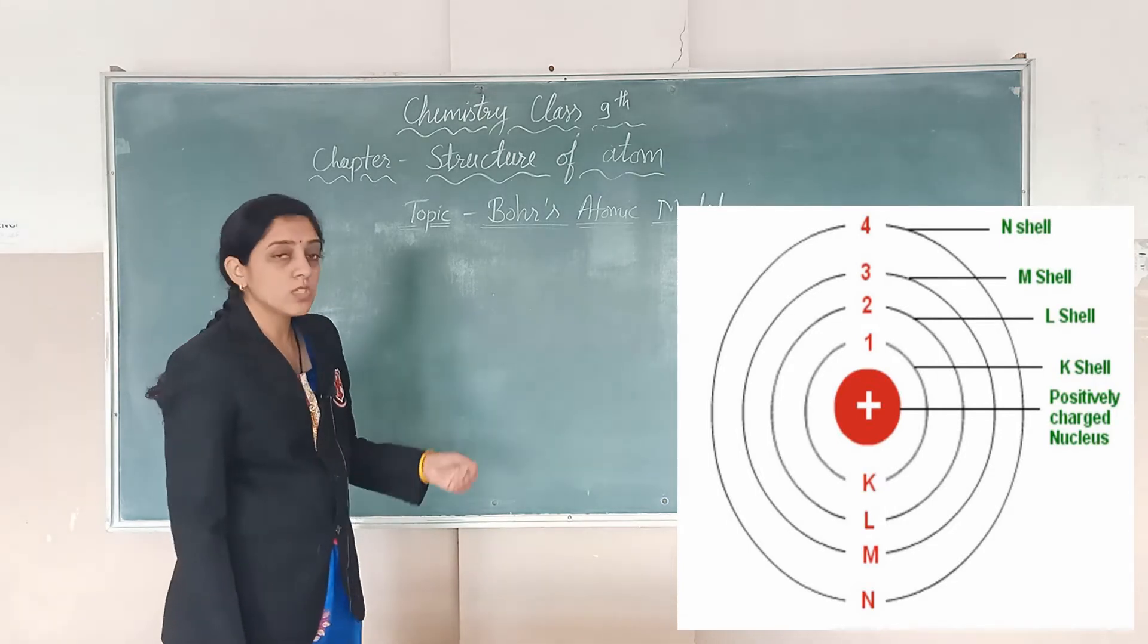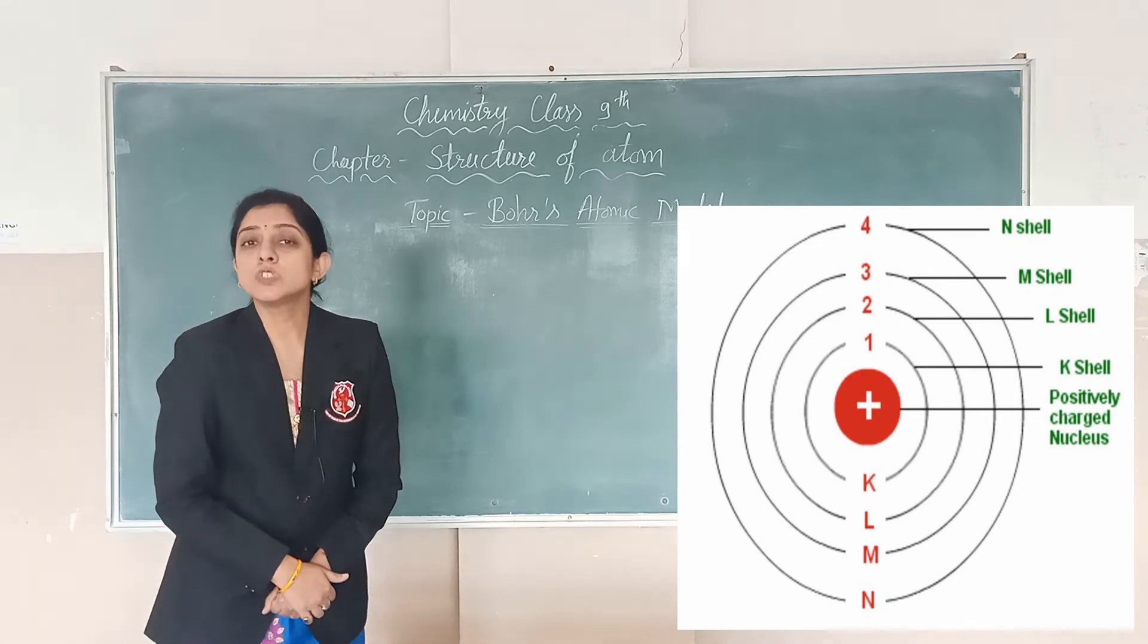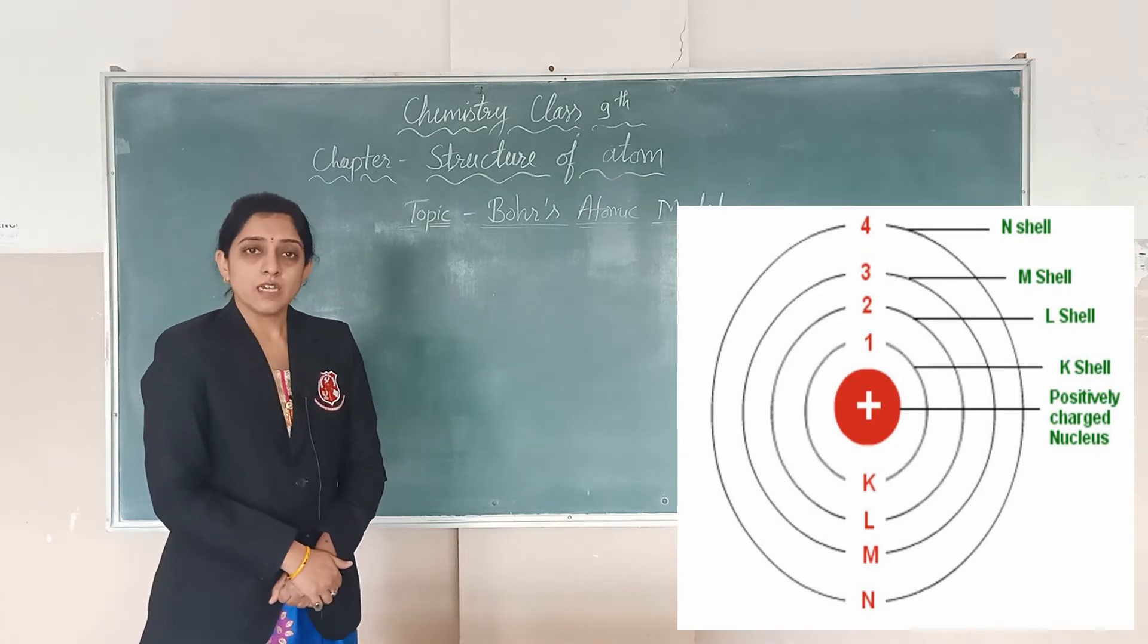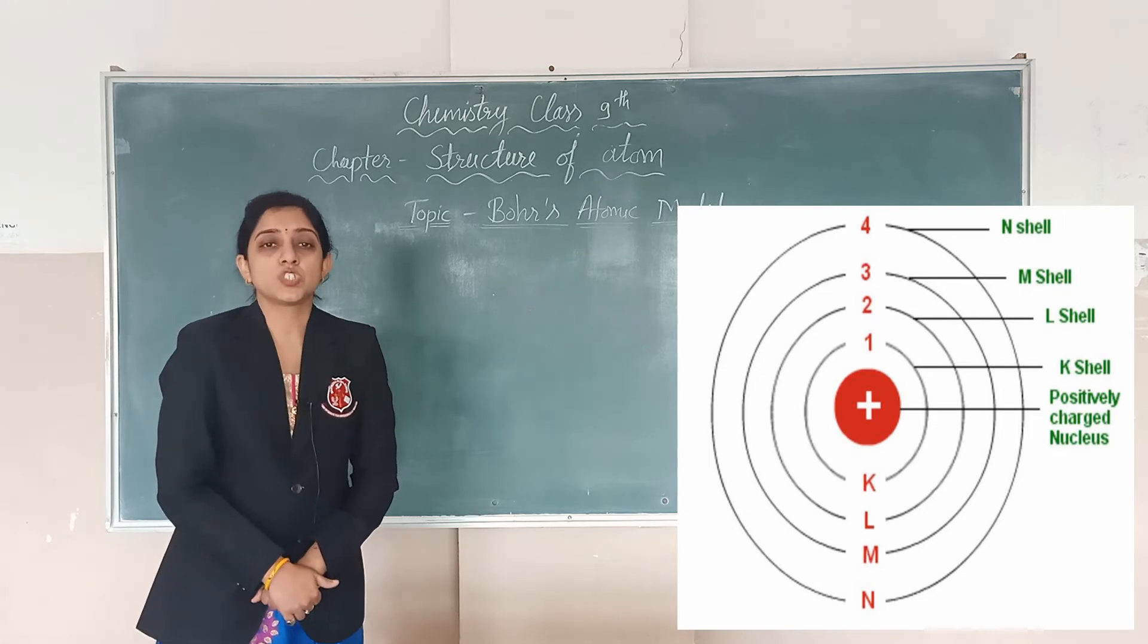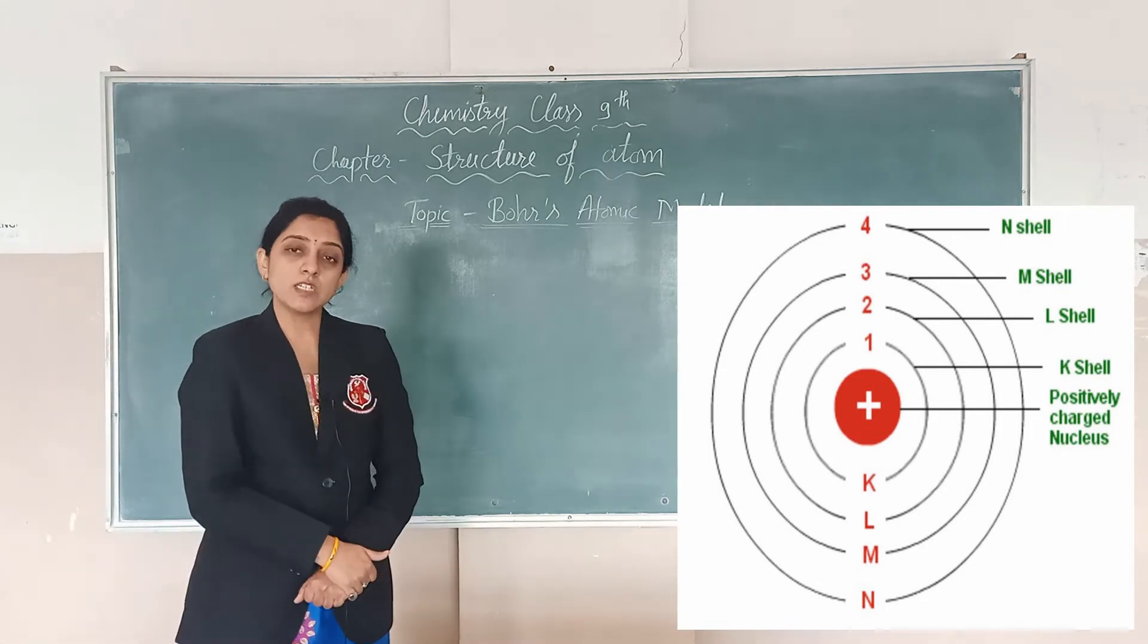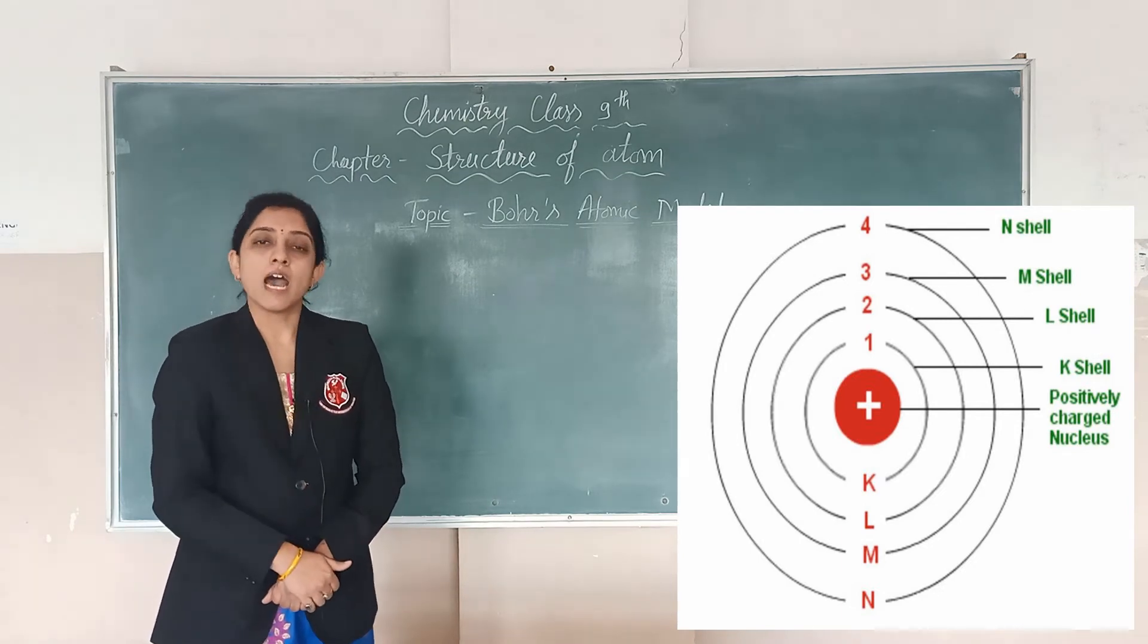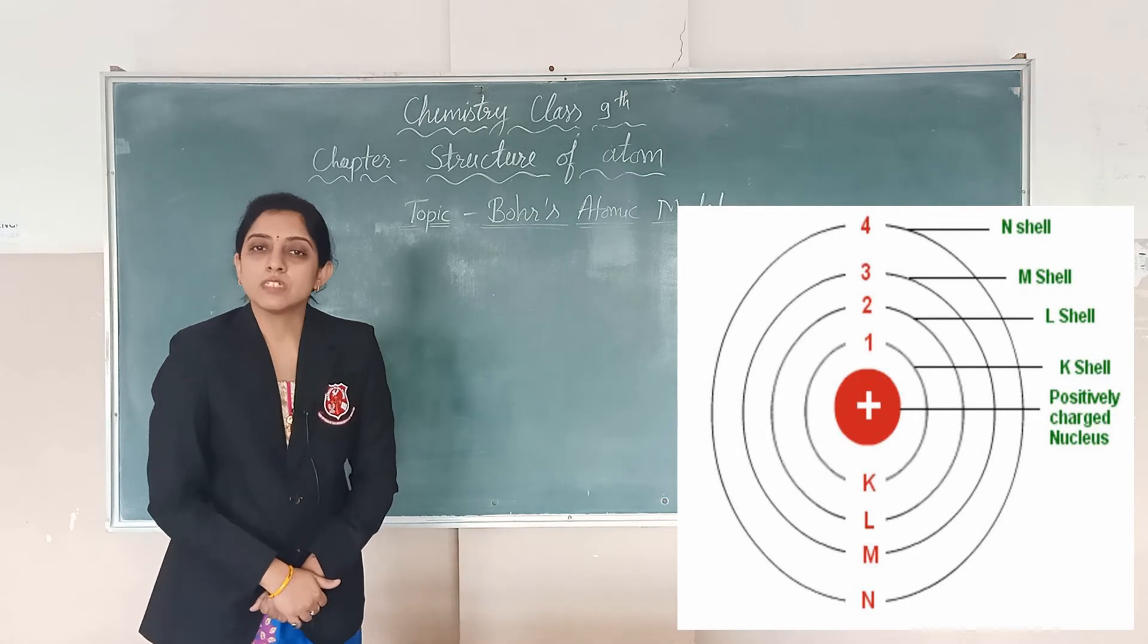K is the shell which is nearest to the nucleus, then L, then M, then N and so on. And there is energy difference in these shells. The K shell which is nearest to the nucleus has minimum energy. And as we move to the higher shells, the energy increases.